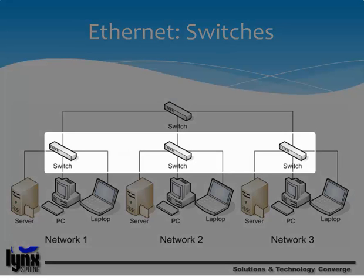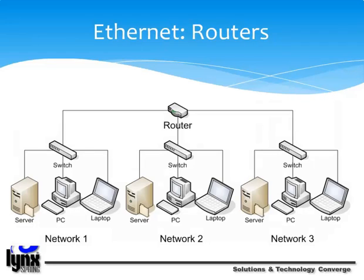Most large networks use switches rather than hubs to connect computers within the same subnet. A router is similar to a switch in that it forwards packets based on an address, but instead of the MAC address that a switch uses, a router can use the IP address. This allows the network to go across different protocols. The most common home use for routers is to share a broadband internet connection. The router has a public IP address that is shared within the network. Routers filter out network traffic by specific protocol rather than by packet address, and divide networks logically instead of physically. An IP router can divide a network into various subnets so that only traffic destined for a particular IP address can pass between the segments. In more complex networks, overall efficiency is improved by using routers.